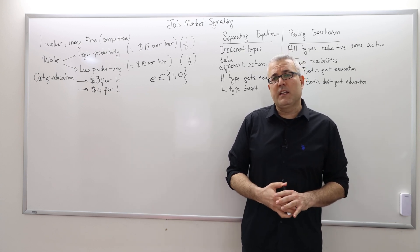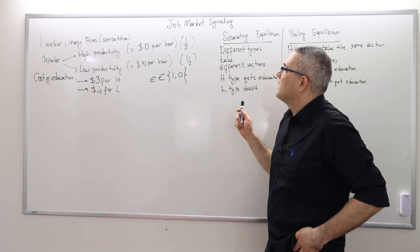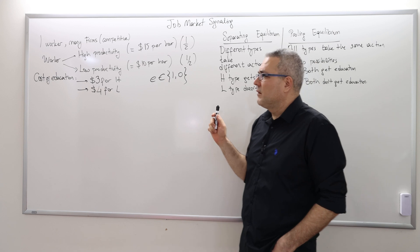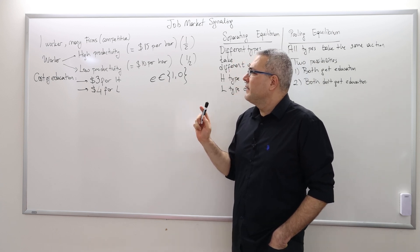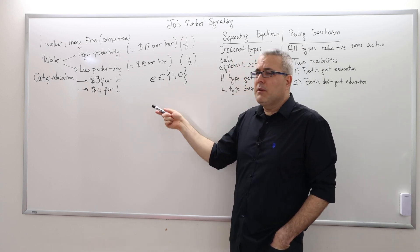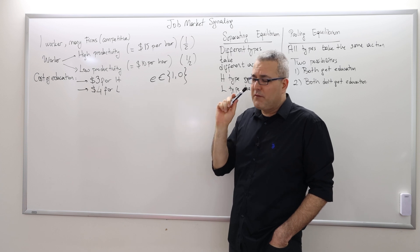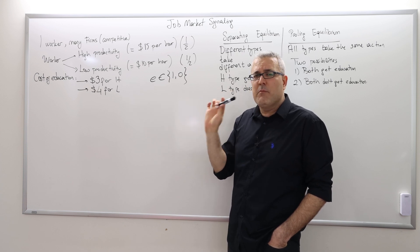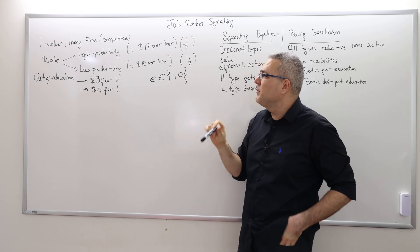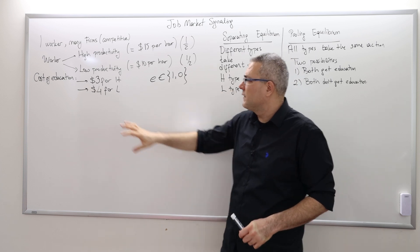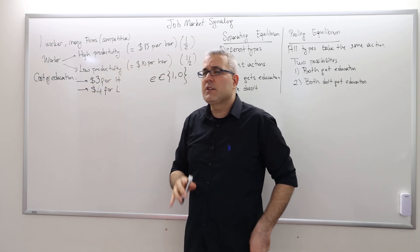Here is one final example of the job market signaling model of Spence. The problem I'm going to work now is very much the same as the previous problem. The only difference is the cost of education.